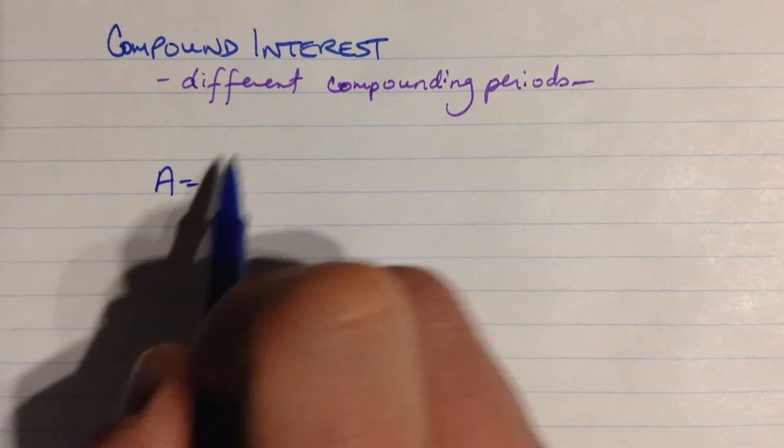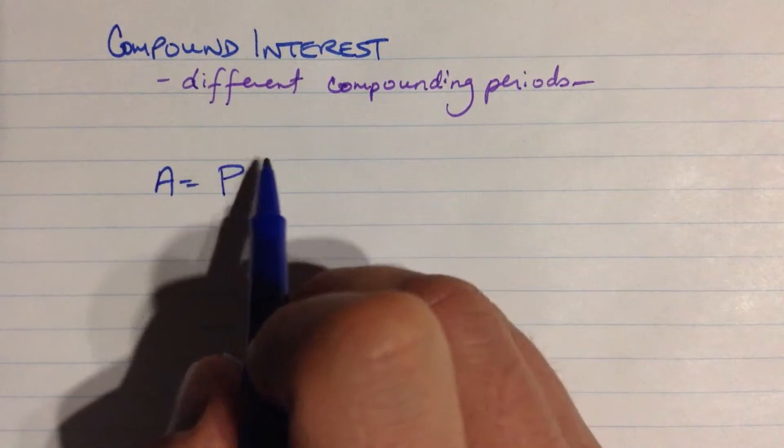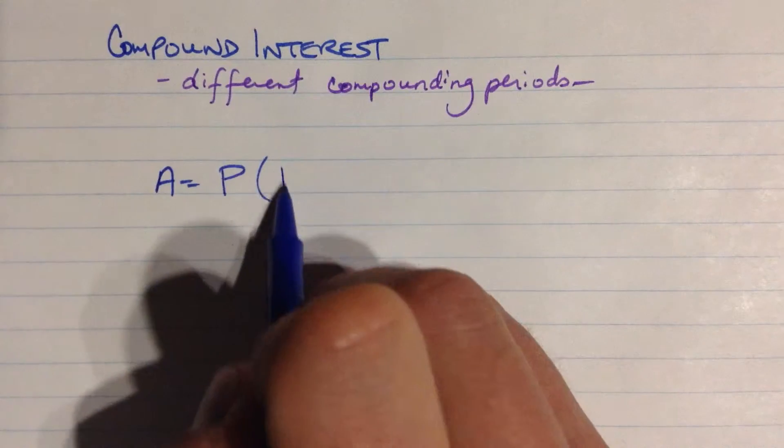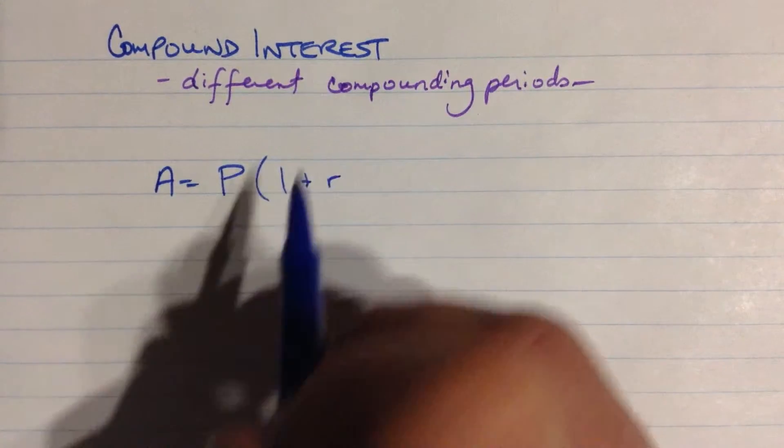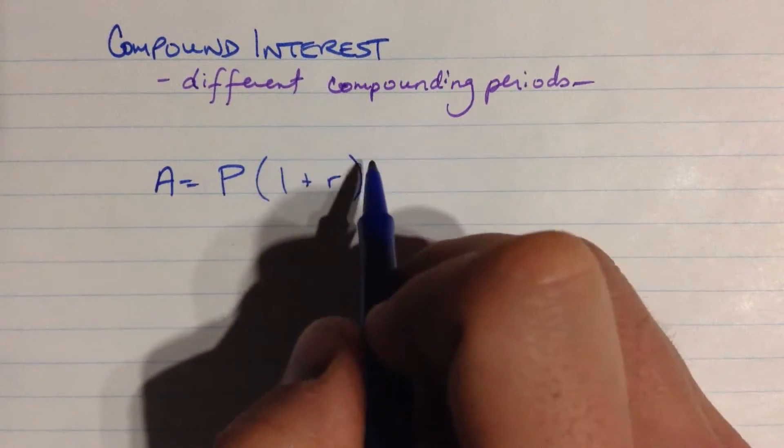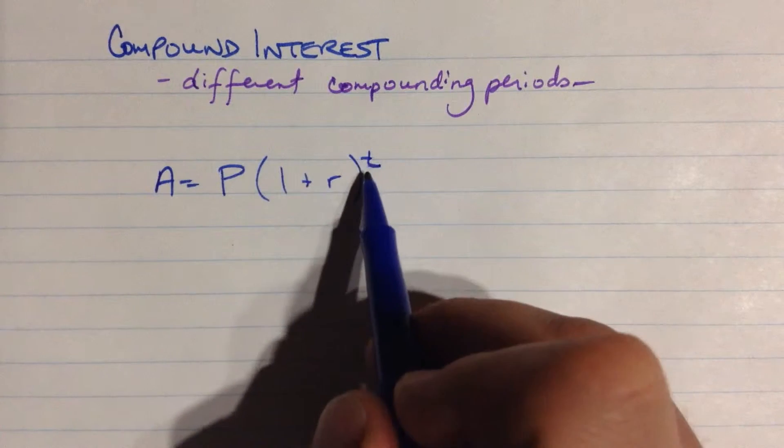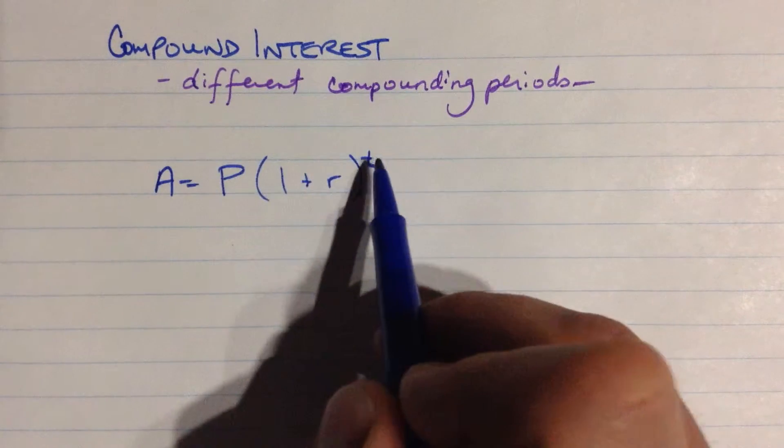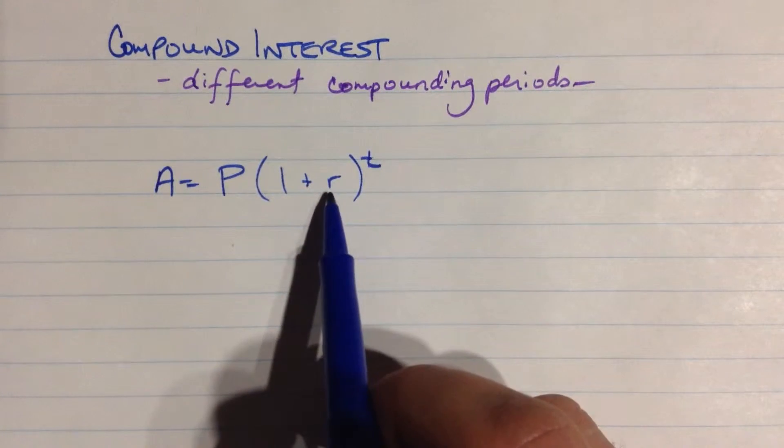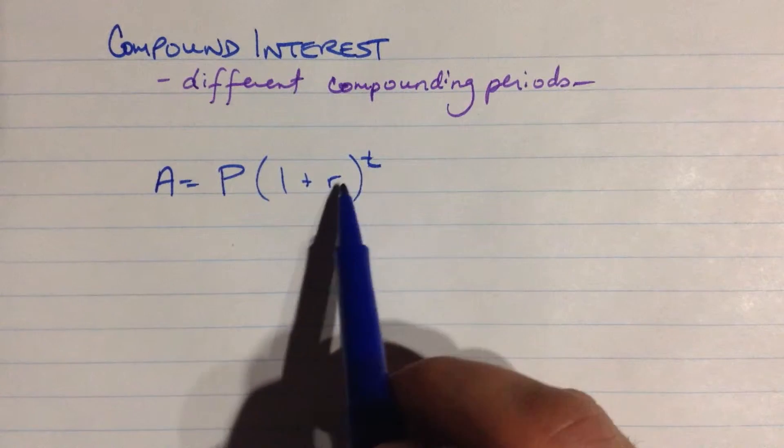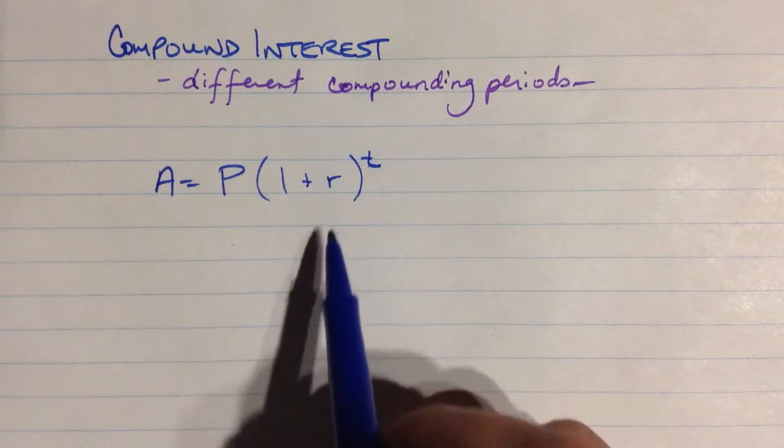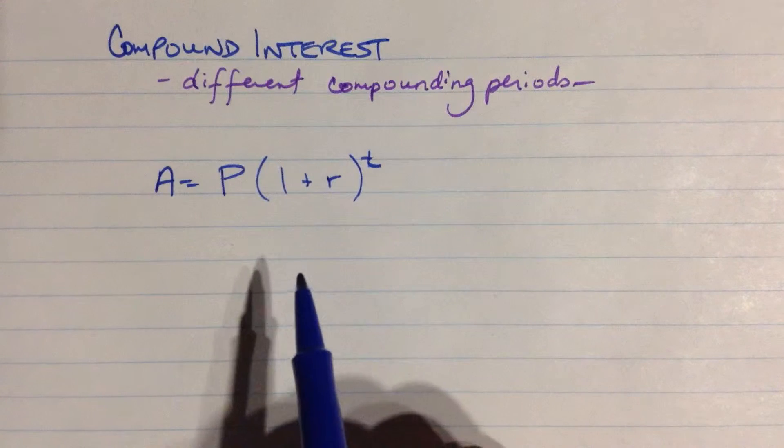So what we had before was that the future value was equal to the present value times one plus the rate as a decimal, the annual percentage rate, raised to an exponent which was the amount of time, the number of years that were passing. And this is important that the rate and the time are both in the same sort of units, the annual rate and a number of years.